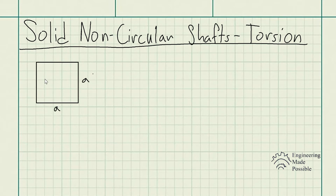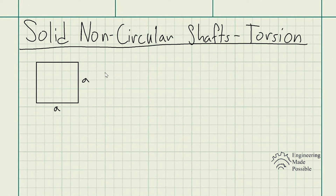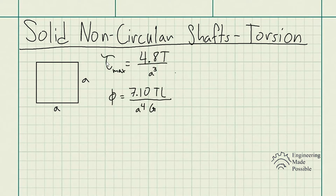Now let's say we have a shaft that has a square cross-sectional area with these dimensions. The length is A here, or the widths. What exactly would be the maximum shear stress in addition to the angle of twist? These equations have already been derived, which are the following.